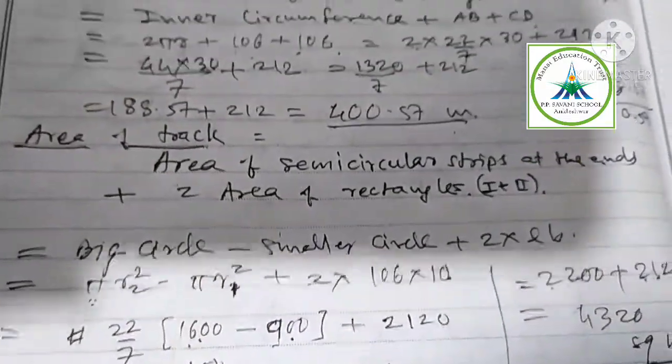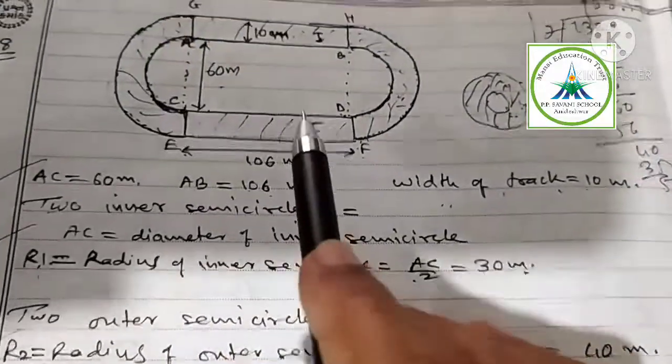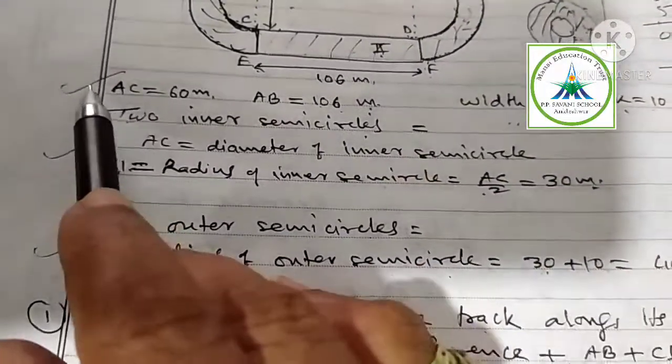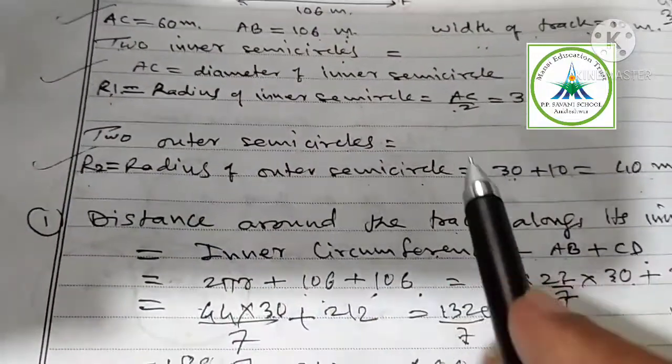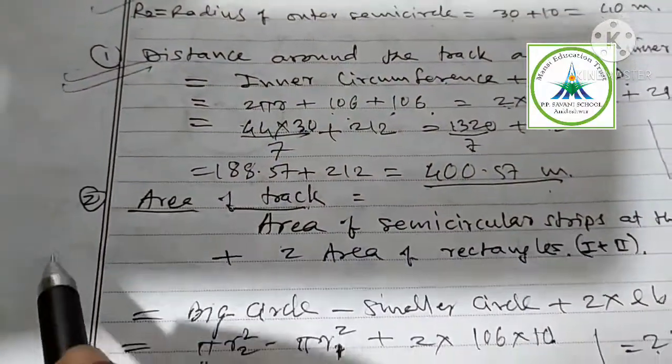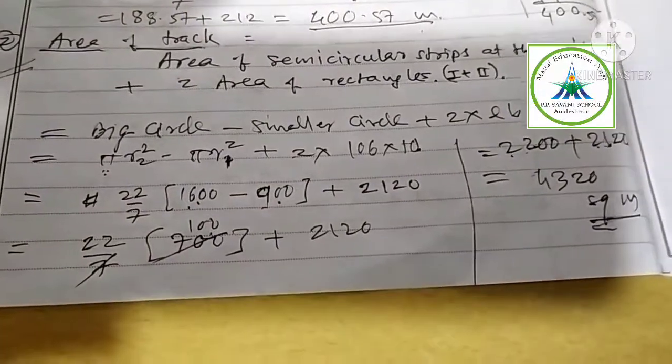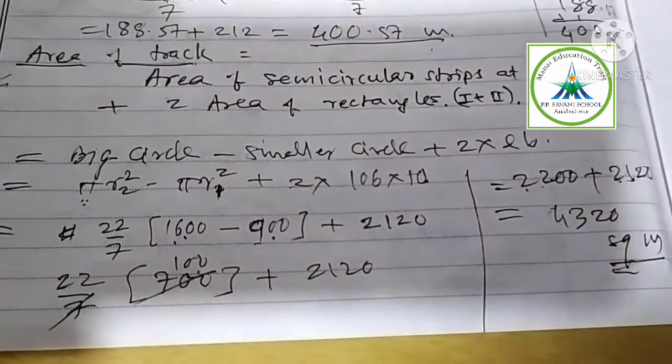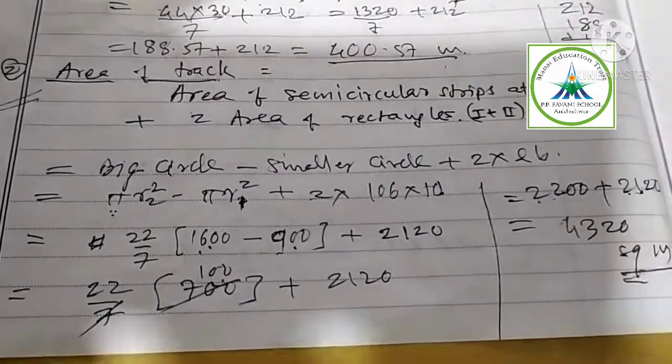Please watch properly, understand the example. Here important is understanding diagram, naming all these things: inner radius, inner semicircles, outer radius, outer semicircles, distance curve. This combination is very important. Please watch properly. Solve all examples yourself. Any problem, any doubt, you can ask me anytime. Thank you.